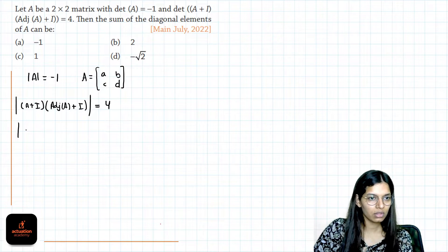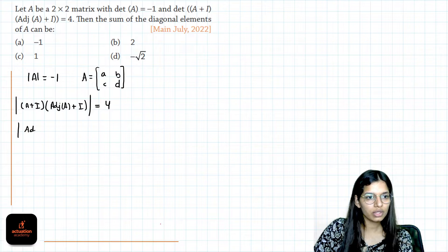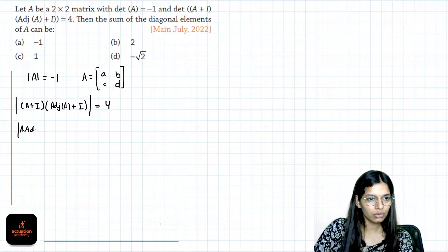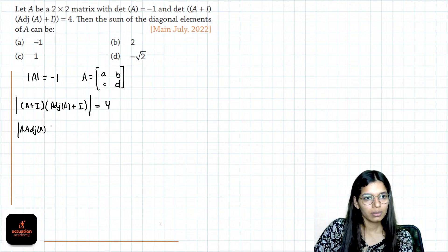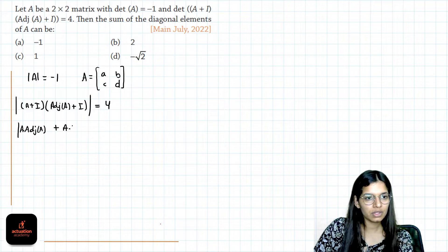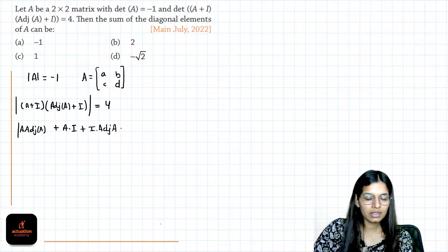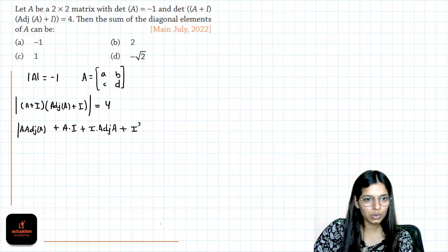Now multiply them. This will be A into adjoint of A plus A times I plus I into adjoint of A plus I into I will be I square.